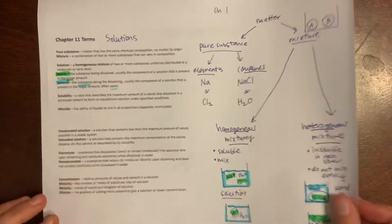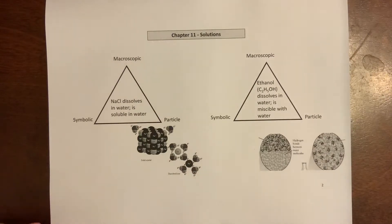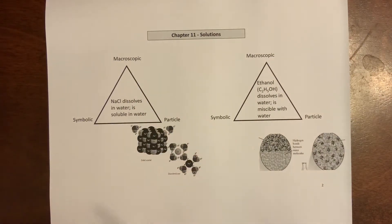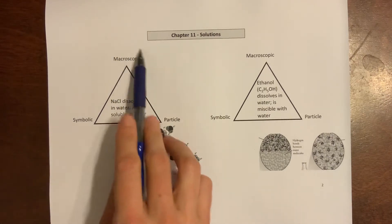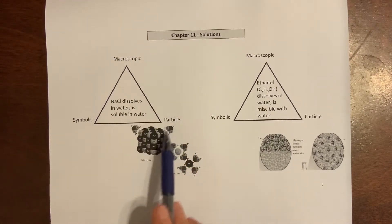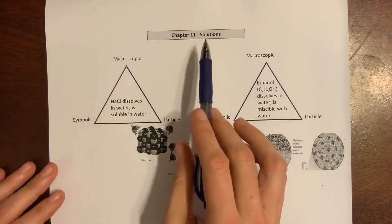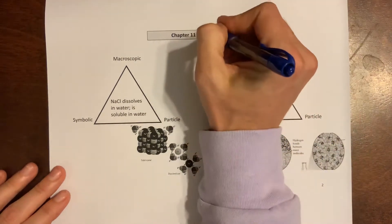Saltwater and ethanol mixed in water. If you remember these triangles, they remind us to look at everything from three perspectives: the macroscopic what you can see, the particle what you could build with a model, and then the symbols, the quick way to write it down on paper.